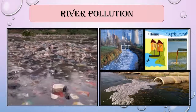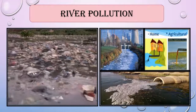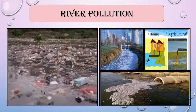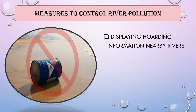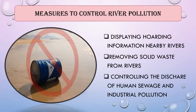The largest source of water pollution in India is untreated sewage. Other sources include agricultural runoff and small scale industry. Most rivers, lakes, and surface water in India are polluted due to various industries, untreated sewage, and solid waste. Measures to control river pollution include displaying information hoardings near tourist sites to discourage water pollution, highlighting the importance of cleanliness, removing solid waste from rivers, controlling the discharge of human sewage into rivers, and providing appropriate treatment to industrial waste before it enters rivers.